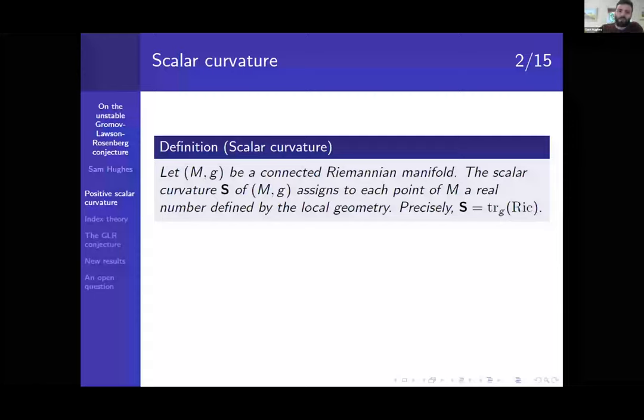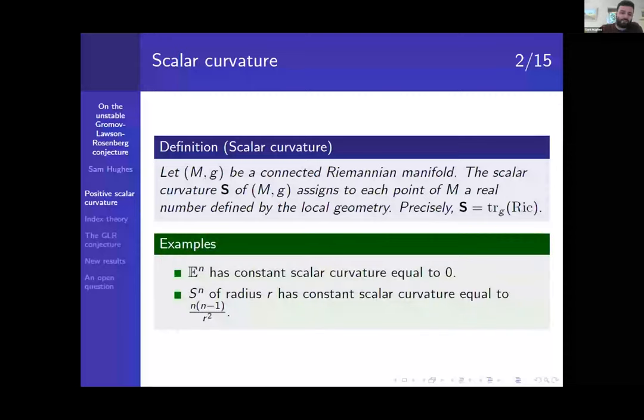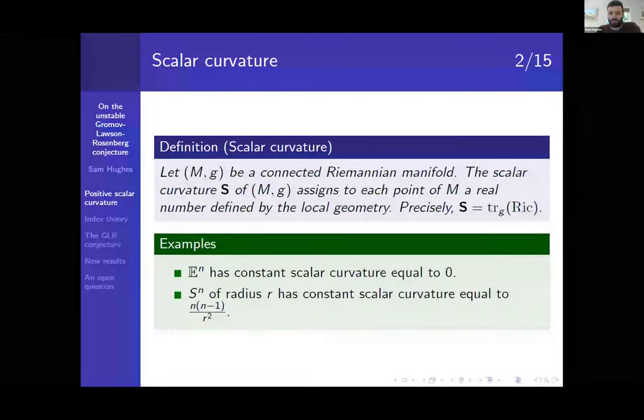So scalar curvature, if we have a manifold M with a Riemannian metric g, the scalar curvature essentially is kind of a local property which is going to compare the volume of balls in this manifold to the volume of balls in Euclidean n-space. So precisely we're going to take the trace of the Ricci tensor. Two easy examples: the Euclidean space has curvature equal to zero and the sphere of radius R, the n-sphere of radius R, has curvature equal to n minus 1 over R squared. So we can normalize this so that we can just say the sphere has constant scalar curvature equal to one.